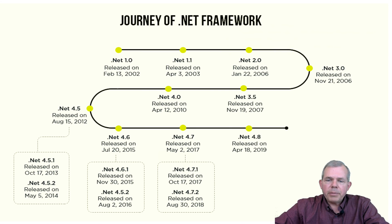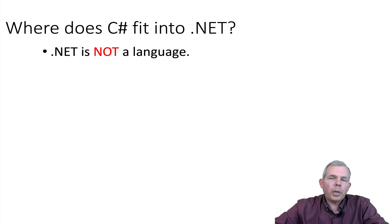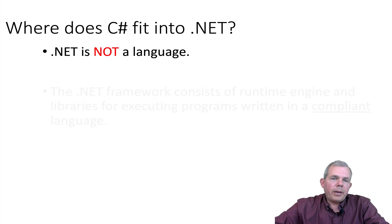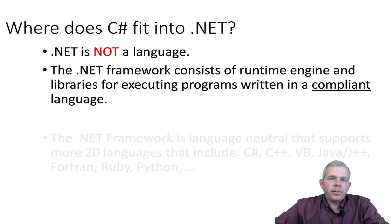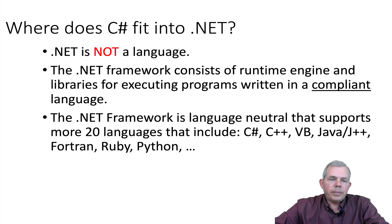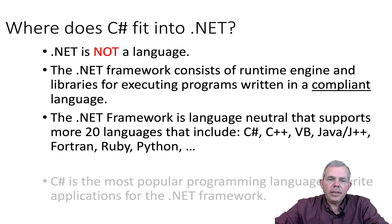At the time of this video, we're at the late versions of version 4.8. .NET is not a language — it is a collection of frameworks. C# is one of the languages you can work with in .NET, making it a .NET-compliant language. C# and Visual Basic are probably the first two that come to mind. There are about 20 different languages that will actually compile into .NET.